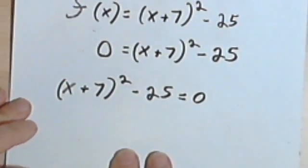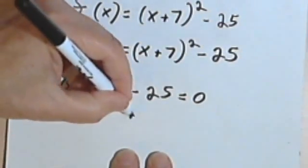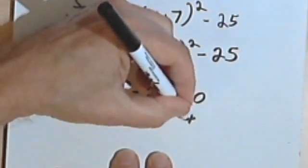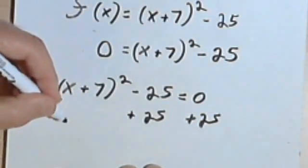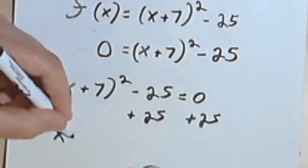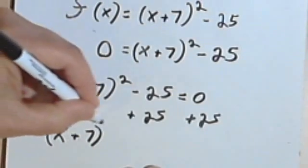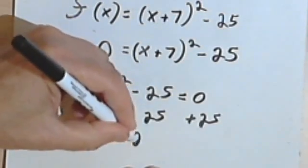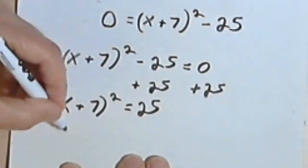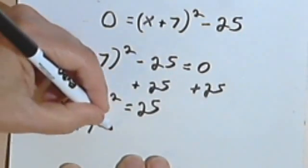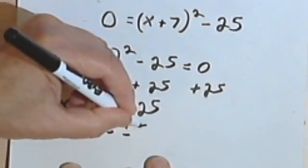And now it's just like the previous problem that we did. So we'll add 25 to both sides. And we're going to get x plus 7 squared equals 25, and x plus 7 equals plus or minus 5.